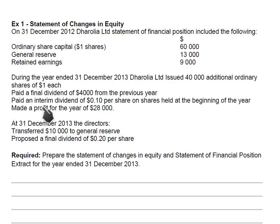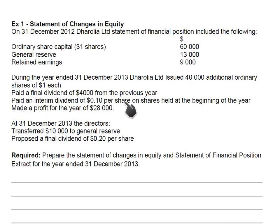The company pays interim dividend for the current year in the same year. The final dividend for the current year is paid in the next year. So for 2013, the final dividend for the previous year 2012 is paid in 2013, the interim dividend for 2013 is paid during 2013, and the final dividend for 2013 will be paid in 2014. An interim dividend of $0.10 per share is paid on shares held at the beginning of the year.